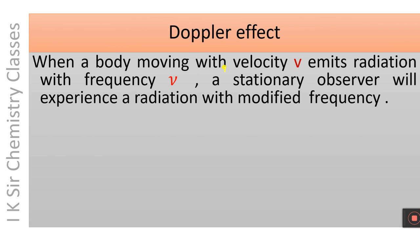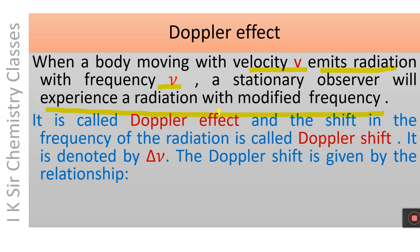When a body moves with velocity v and emits radiation with frequency ν, a stationary observer will experience radiation with a modified frequency — that is, the frequency of the radiation will be changed or shifted. This is called the Doppler effect.